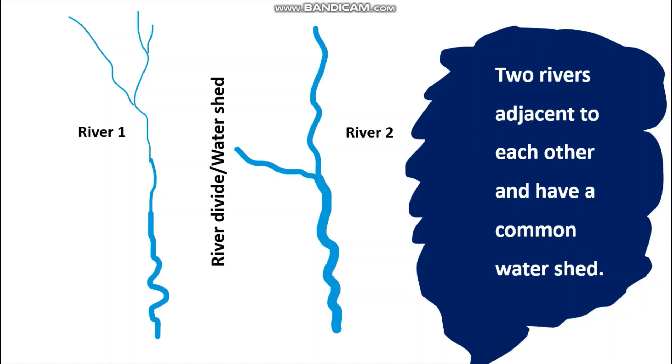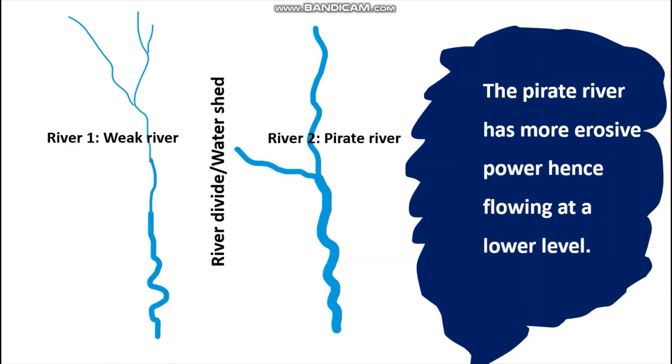Welcome to another video tutorial. Here I'm covering the concept of river capture, also known as river piracy. River capture takes place where we have two rivers adjacent to each other flowing the same direction and sharing a common watershed or river divide. A watershed is the raised ground in between any two adjacent river basins.